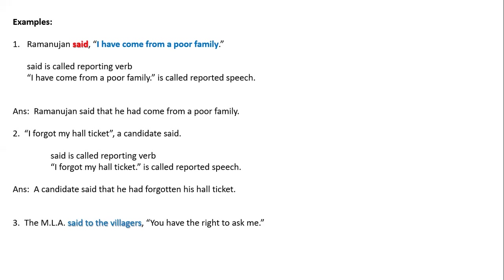Example: 'A candidate said, I forgot my hall ticket.' 'Said' is the reporting verb; 'I forgot my hall ticket' is the reported speech. Indirect: 'A candidate said that he had forgotten his hall ticket.' Next: 'The MLA said to the villagers, you have the right to ask me.' Indirect: 'The MLA told the villagers that they had the right to ask him.' 'You' — second person — becomes 'they' as the reporting verb object is 'villagers'. 'Me' becomes 'him.'